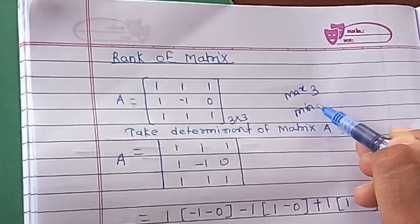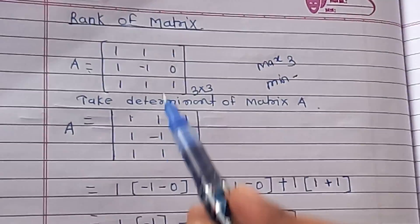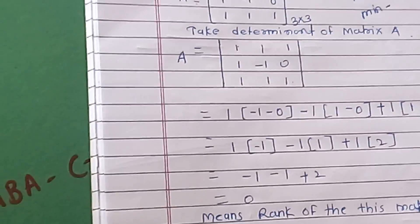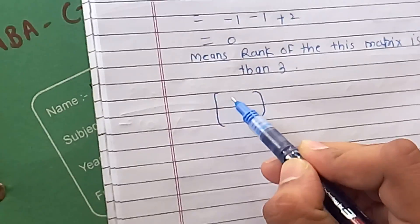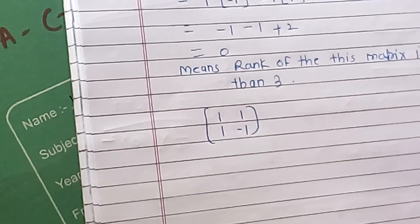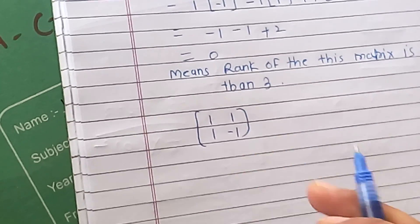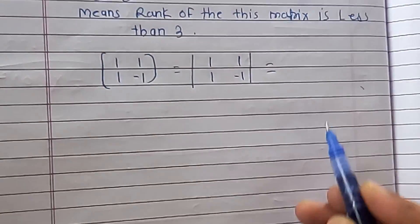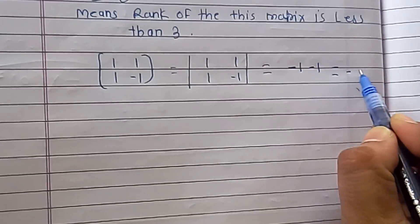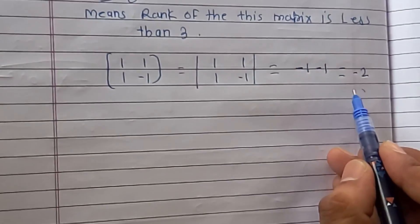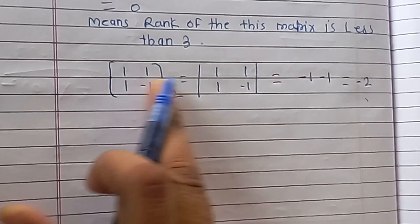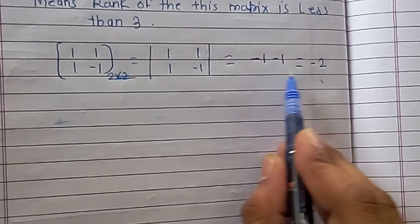Since the rank is less than three, we now need to check two by two submatrices. We take a two by two submatrix — for example, with entries one, one, minus one — and find its determinant. The determinant comes out to minus one minus one, which equals minus two.